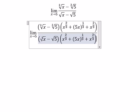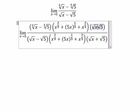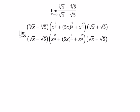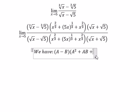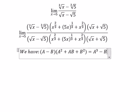About this one, we multiply with the square root of s plus the square root of 5. We have a plus b, a minus b, multiplied by a square plus ab plus b square, equal to a to the power of 3 minus b to the power of 3.